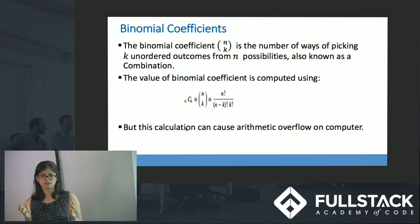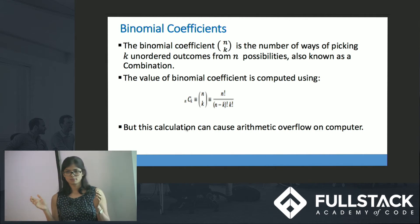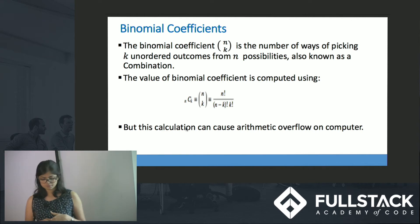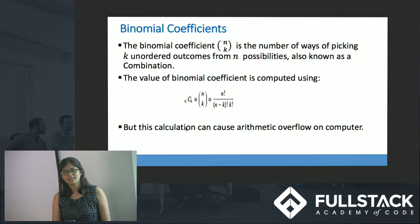I may not be able to store that value inside one variable so I may go through an arithmetic overflow. So how else can we solve this problem? Food for thought.